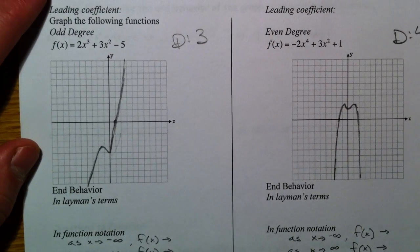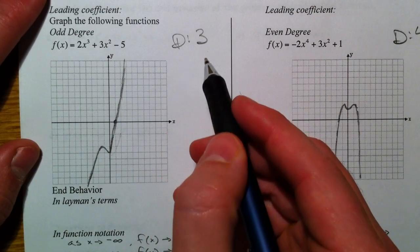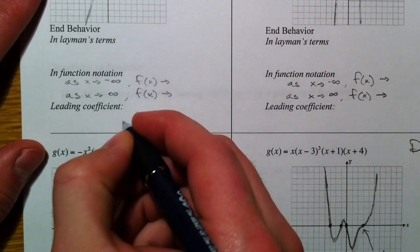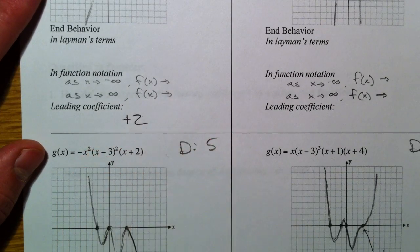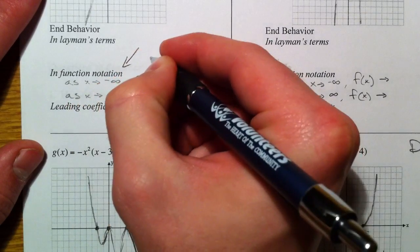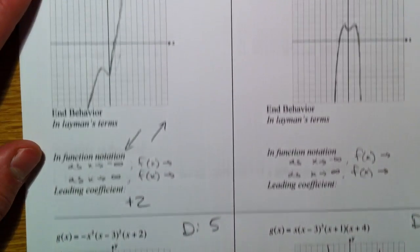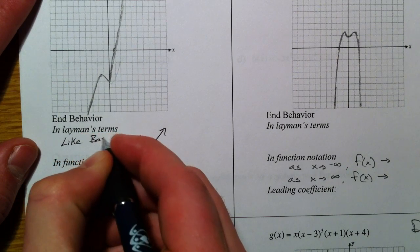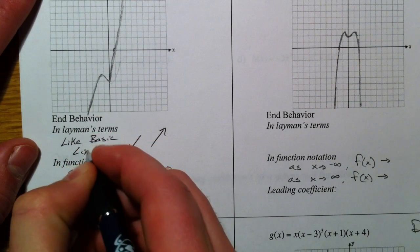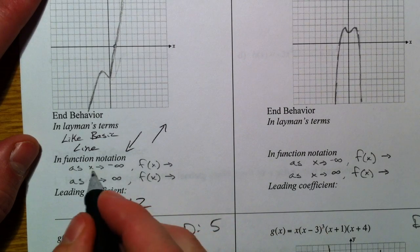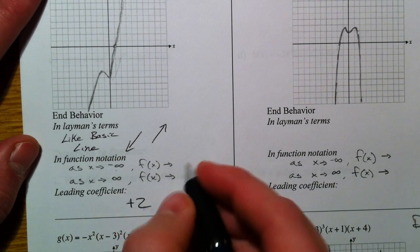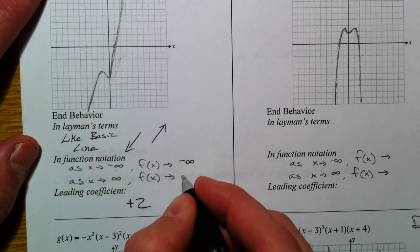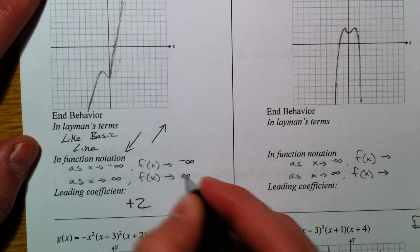Degree 3, a positive leading coefficient of 2: it goes down to the left and up to the right, just like the basic positive line. As x goes to the left, f of x goes down to negative infinity. And as x goes to the right, f of x goes up to positive infinity.